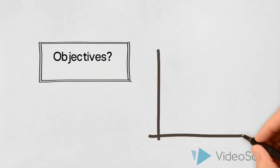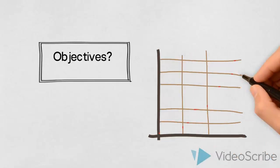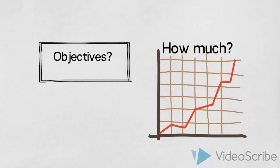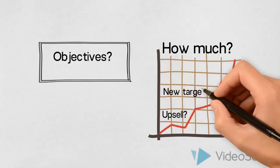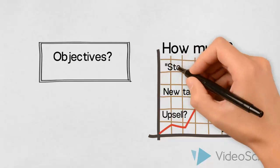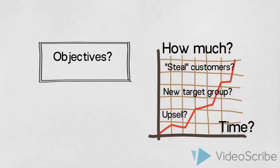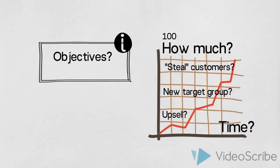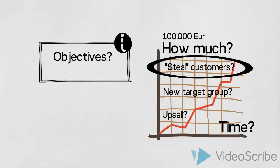First of all, we would like to know his objectives with the campaign — what does he want to achieve? He stated he wanted an increase in sales, but by how much and during which time frame? Would he like existing customers to spend more? Does he want to attract a new target group? Or perhaps he wants to increase market share by stealing customers from the competition? If we don't clarify the French Cafe's objectives, we are unlikely to carry out an effective campaign. So let us say that the French Cafe is aiming for an increase in turnover by €100,000 over a six-month period, and that they want to steal customers from the competition.